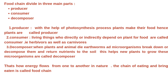A food chain is divided into three main parts: Producer, Consumer, and Decomposer. 1. Producer: With the help of photosynthesis, plants make their own food — hence plants are called producers. 2. Consumer: Living things that directly or indirectly depend on plants for food are called consumers, i.e., herbivores as well as carnivores. 3. Decomposer: When plants and animals die, earthworms and microorganisms break down or decompose them and return nutrients to the soil — this helps new plants to grow. These microorganisms are called decomposers.